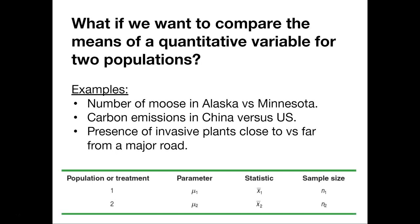To do that, our parameters of interest are the population means mu1 and mu2. The best approach is to take separate random samples from each population and to compare the sample means. For example, we might count all of the moose in Alaska and all of the moose in Minnesota to say something about whether or not those populations are different.